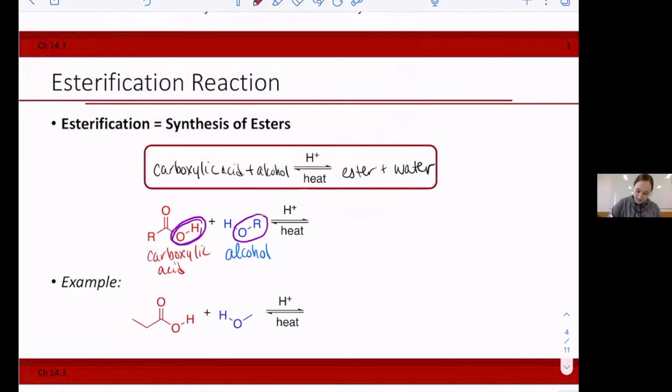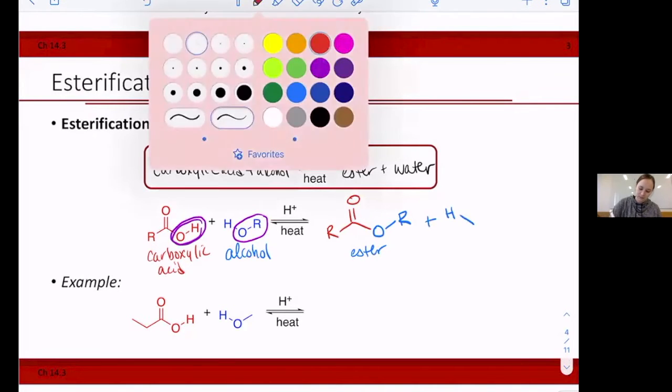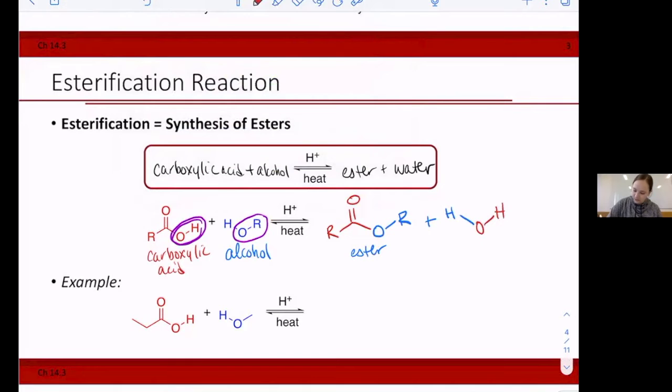So the OH here of the carboxylic acid flip-flops places with the OR of the alcohol. So you see how I even drew them at the same angle, and I'm just going to flip-flop those places. So let's draw out what that looks like. We have R, O. I'm going to flip my colors so that we're very clear. Now we have an ester, plus we keep that hydrogen, and then we have our OH. So we have water. So just take where those two oxygens are and flip-flop their places in order to get the esterification reaction.